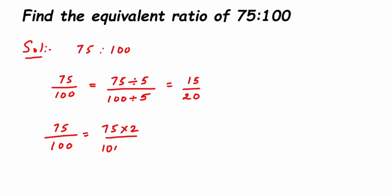So 75 multiplied by 2, upon 100 multiplied by 2. This gives 150 upon 200. So 150 upon 200 is another equivalent ratio of 75 is to 100.